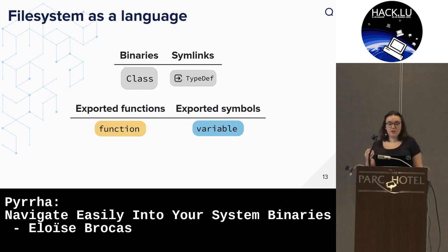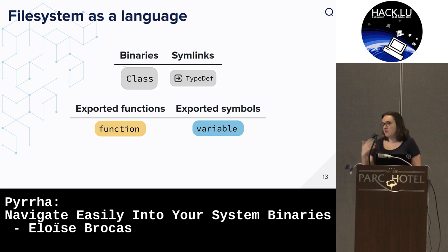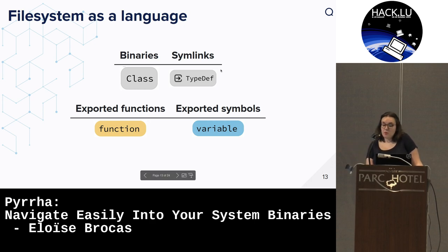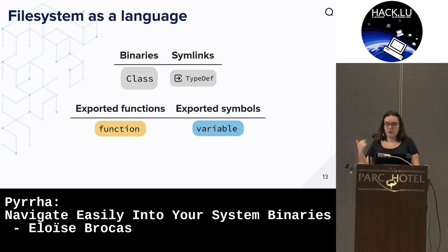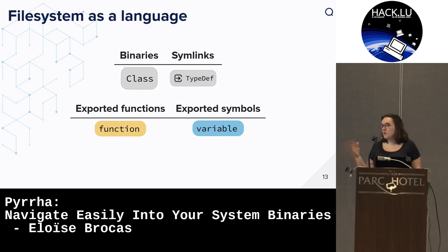We need to define how we can represent a file system as a language. We wanted to map two things: all the executable files - we handle ELF files and PE files - but also all the symlinks that point to the binaries, because it's really important to know all the names an executable can have. A symlink is just another name and path for your executable. We represent symlinks as typedefs, and binaries can export functions and symbols, and import functions and symbols - so we represent them as a class with methods and fields.